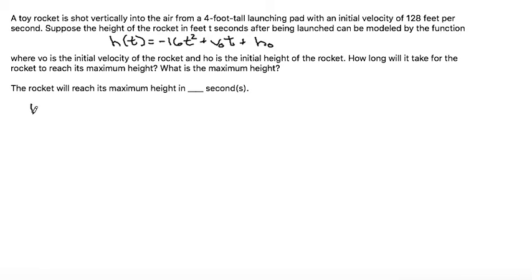So let's write this as h(t) = -16t² plus, and in place of v₀, let's write 128t plus. It says that h₀ is the initial height of the rocket, and it says it's from a 4-foot tall launching pad, so we can plug in 4 for h₀.